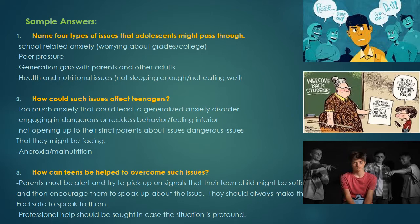Four types of issues that adolescents might pass through. First, school-related anxiety — worrying about your grades, competition with your peers, and whether or not you're going to get enough grades to enter a good college. As you all know, it starts with grade 10. When a prestigious university wants to take you, it looks at your grades ever since grade 10. So this is a source of anxiety for many adolescents.